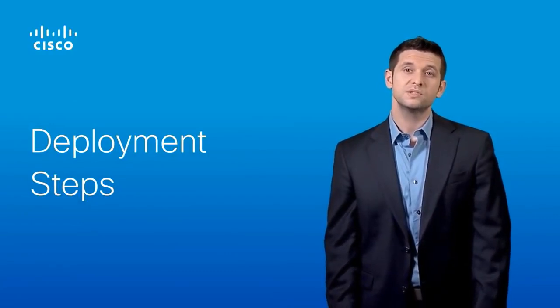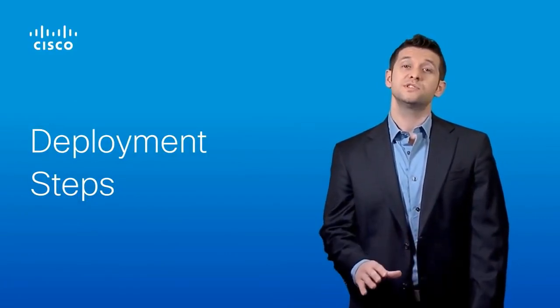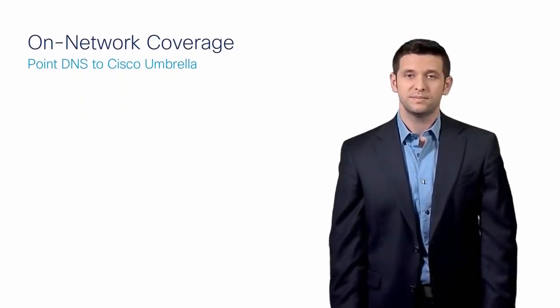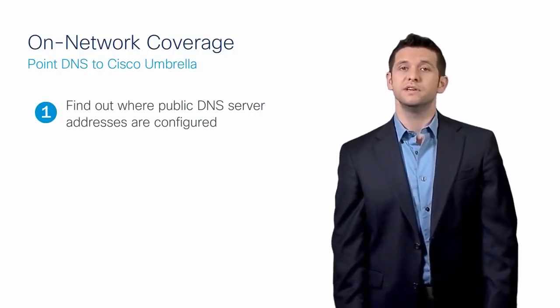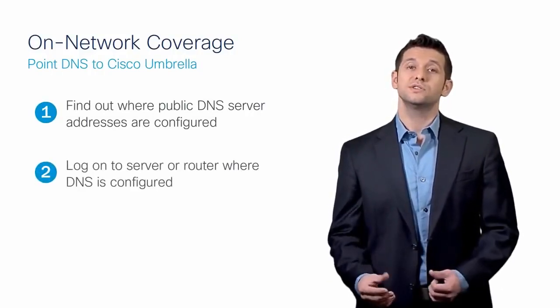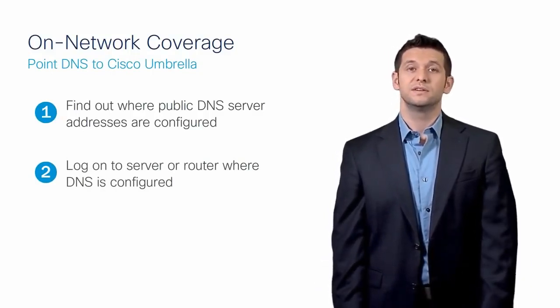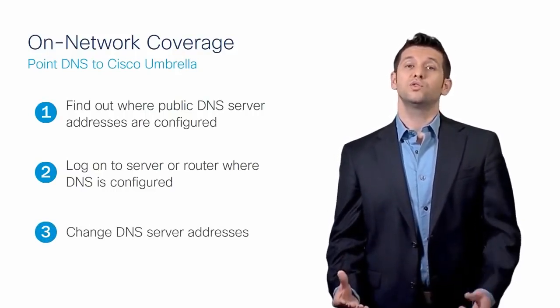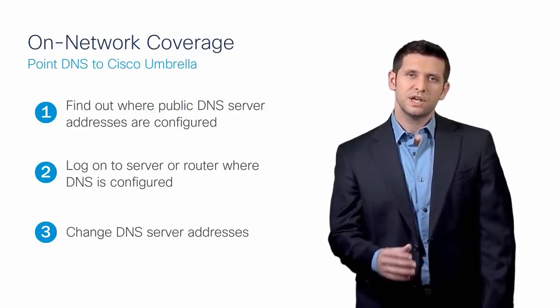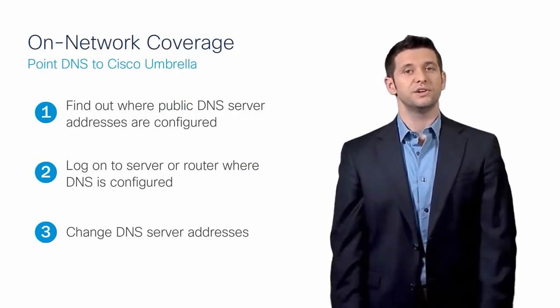Now that we've covered the deployment scenarios, let's quickly cover the steps customers take to deploy for their environment. We hear from our customers that Umbrella is the simplest security solution they've ever deployed — many state that it took less than 30 minutes to deploy enterprise-wide. Step one: find out where the public DNS server addresses are configured. Step two: log on to the server or router where DNS is configured. Step three: change the DNS server addresses. Then you'll go on to create your policies, and with those simple steps, you'll be able to start protecting any device on your network.